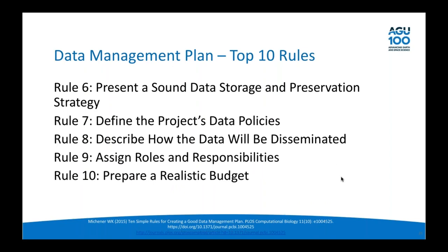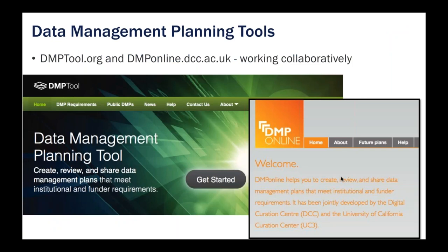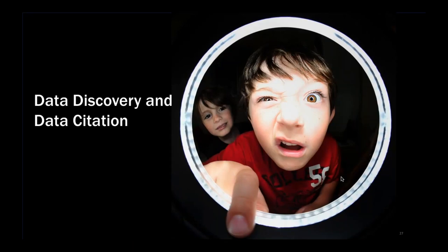Moving on to the next five recommendations — your preservation strategy into the future is really important. There are two tools that are very helpful and that many funders' requirements are built into. We have an international community, so these two tools share the same code base. The DMP Tool is primarily US-based, out of the California Digital Library. DMP Online is out of the UK at the Digital Curation Center. Both teams are fantastic. These are good tools to help you identify everything you need. Let's talk about what it means to prepare for discovery, finding data, choosing repositories, and what citation means.